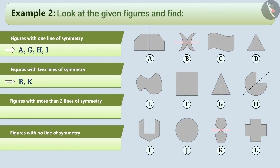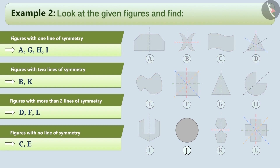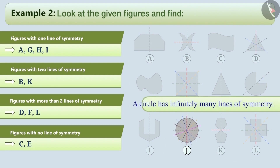Similarly, can you tell which figures have more than two lines of symmetry? Try it for yourself. Figures D, F and L have more than two lines of symmetry. If we look at it, we can say that figures C and E have no lines of symmetry. Because there can be many lines passing through the center of a circle, we can say that a circle has infinitely many lines of symmetry.